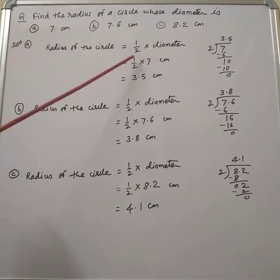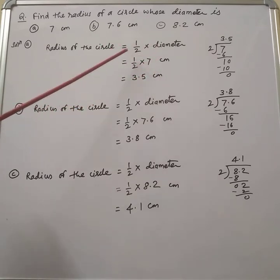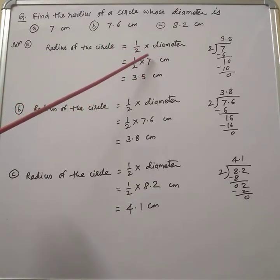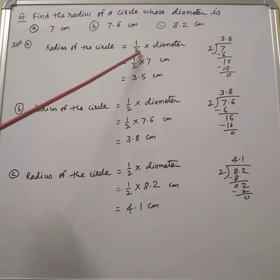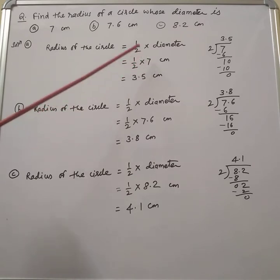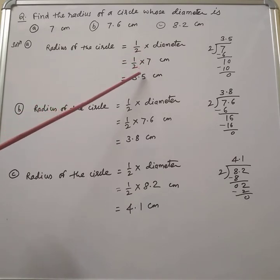So half into 7 centimeters. We have to multiply 1 into 7 in the numerator and 2 is the denominator, so it comes to 7 by 2. Now we have to divide 7 by 2.